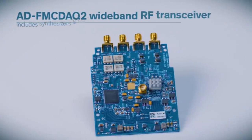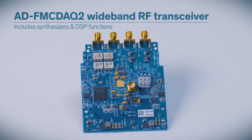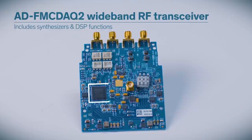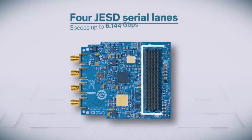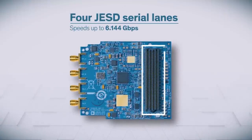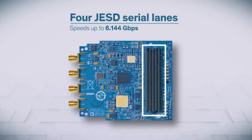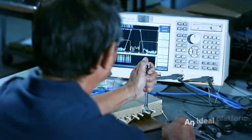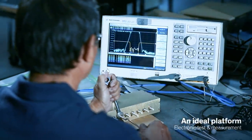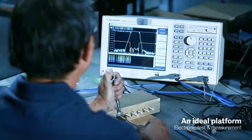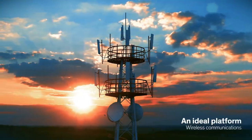The Analog Devices AD FMC DAC2 is a highly integrated wideband RF transceiver that includes both synthesizers and DSP functions. With four JESD serial lanes each running at speeds of up to 6.144 gigabits per second, this is an ideal platform if you're developing products for electronic test and measurement or the wireless communication space.